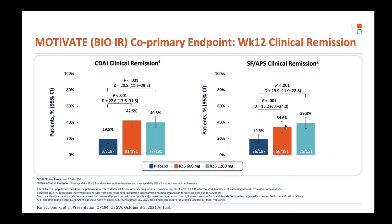These are pretty impressive results, but it is important to note this is week 12 — somewhat later than the week 6 or week 8 primary endpoints of many original phase 3 trials. This is a tough, biologic-experienced population with a very low placebo rate given the 12-week endpoint. Looking at the endoscopic data, there's a delta of approximately 23% versus 17% above placebo, suggesting a dose-response for endoscopic endpoints.